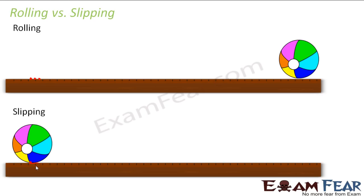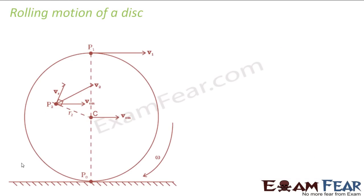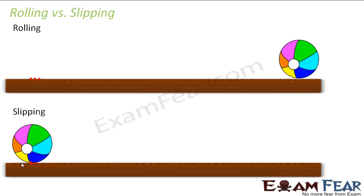In pure slipping, the point in contact with the surface moves and there is no rotation involved at all — the ball is just sliding. There are two terms we often use: rolling with slipping and rolling without slipping. Rolling without slipping is the scenario where the contact point is at rest. In rolling with slipping, there is rotation and translation, but the point in contact is also moving on the surface — it is not at rest. At our level, we will mostly talk of rolling without slipping, which is the simpler scenario.